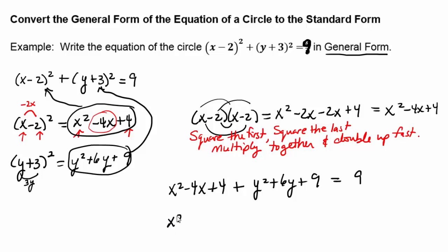What I'm going to do is write x² + y² - 4x + 6y. Then I'm going to put the 4 and the 9 together, that's 13, but subtracting 9 brings me back down to 4. So we have x² + y² - 4x + 6y + 4 = 0. This is the general form of the equation of the circle.